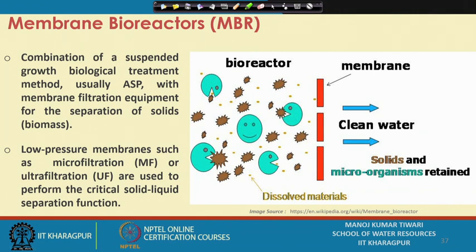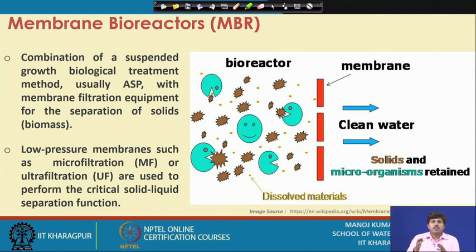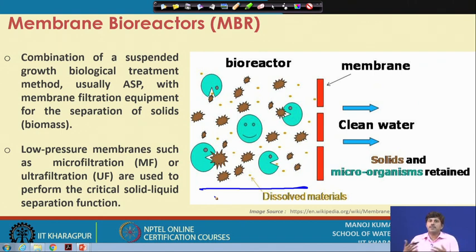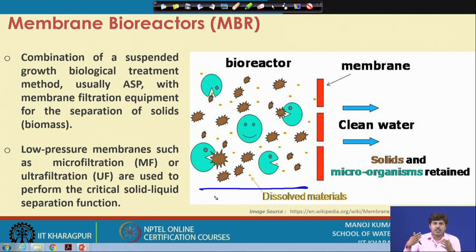Membrane bioreactors are basically a combination of suspended growth biological systems — usually the activated sludge process — used with membrane filtration equipment. In the typical activated sludge process, separation is done by a secondary clarifier, which separates the solid content or sludge mass from the water. However, the efficiency of the secondary settling basin may not be very good.